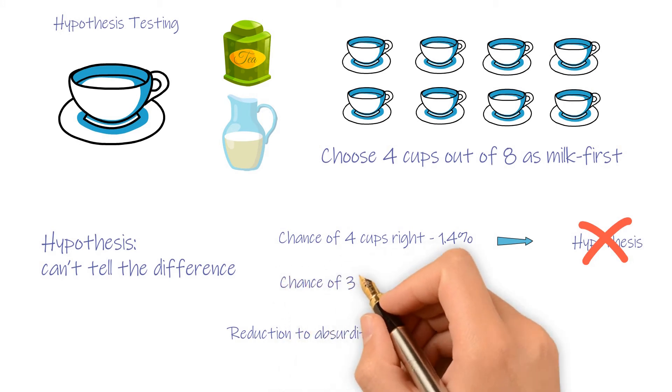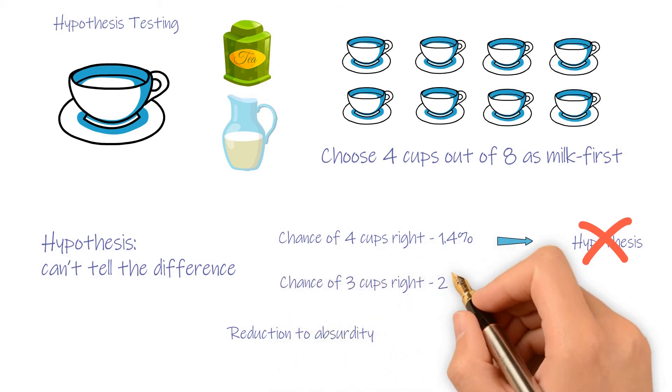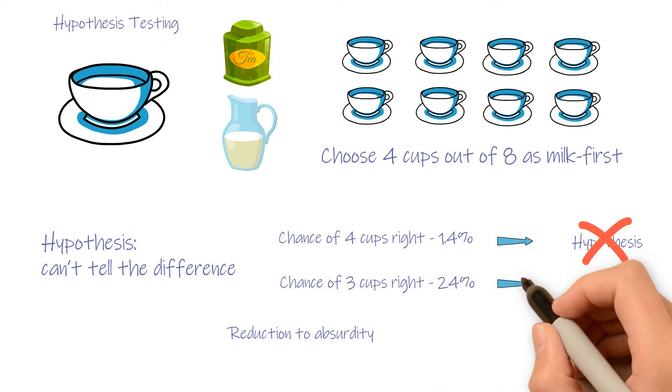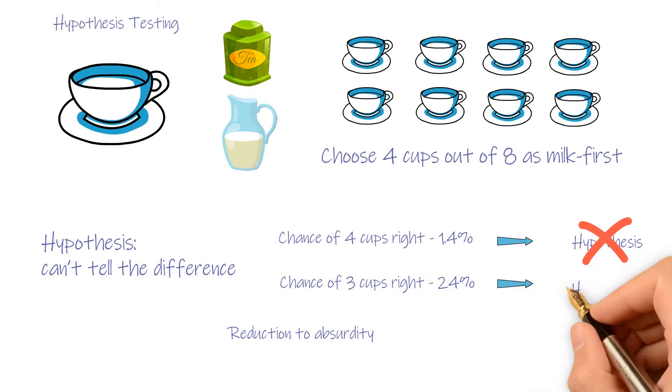But if the lady only gets 3 right, the probability would rise to about 24%, a much less rare result, which means it could happen, then we can accept the hypothesis, which is the lady can't tell the difference.